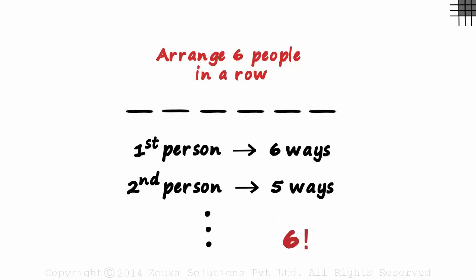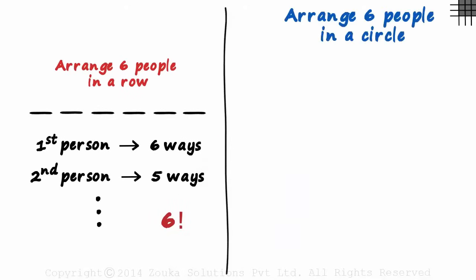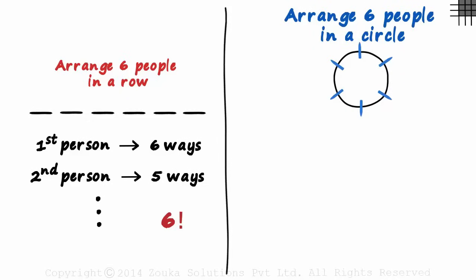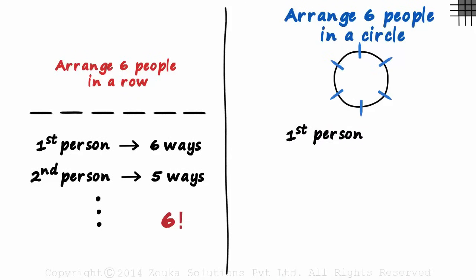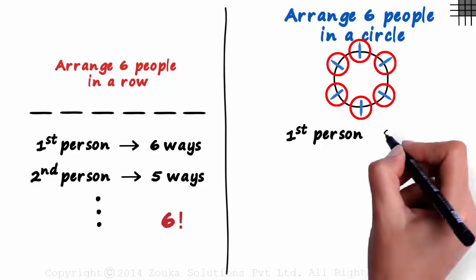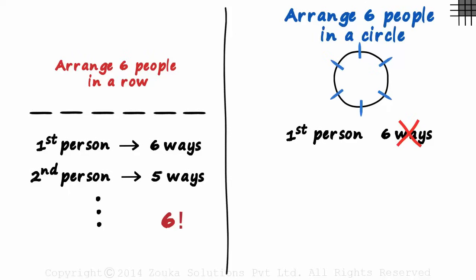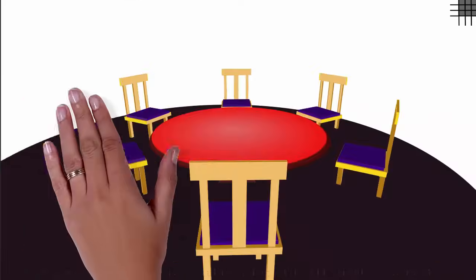Now let's move on to the circular arrangement case. In how many ways can we arrange six people in a circular fashion? Let's draw a circle — assume it's a circular table with chairs around it. Six people can be seated like this. Now let's follow the same approach. In how many different ways can the first person be seated here? As there are six chairs around the table, you might think the first person can be seated in six different ways. But that is not correct.